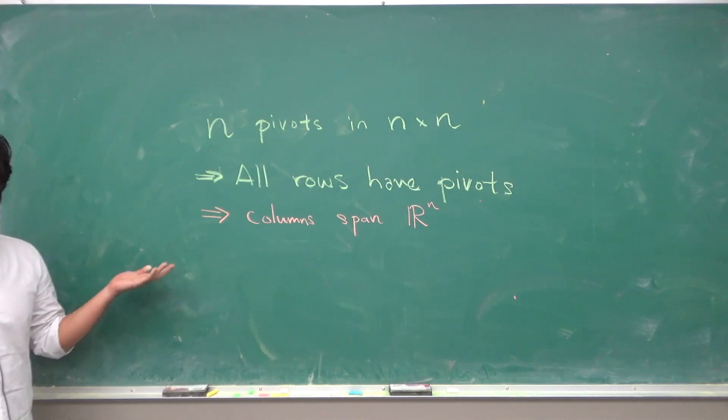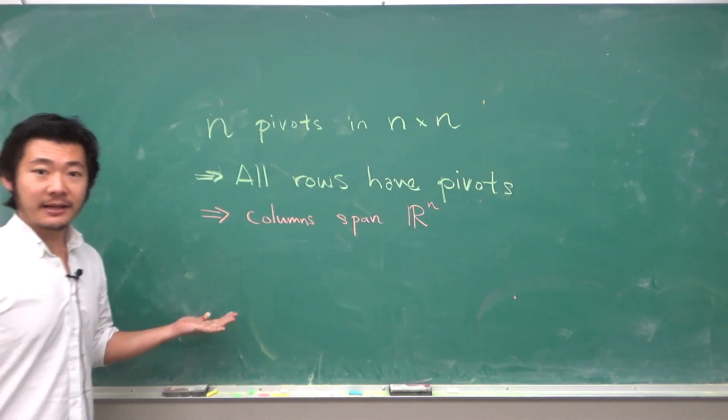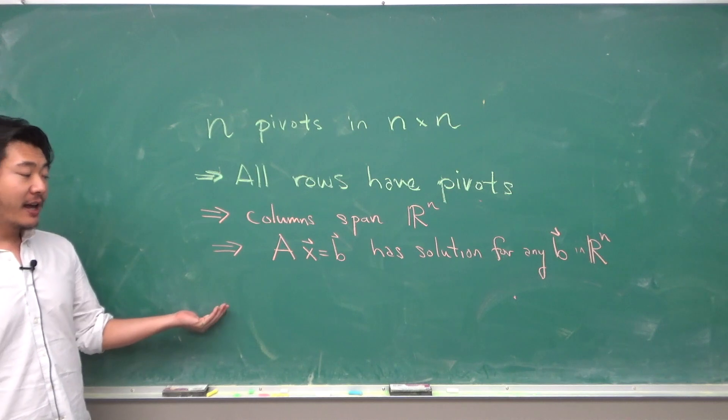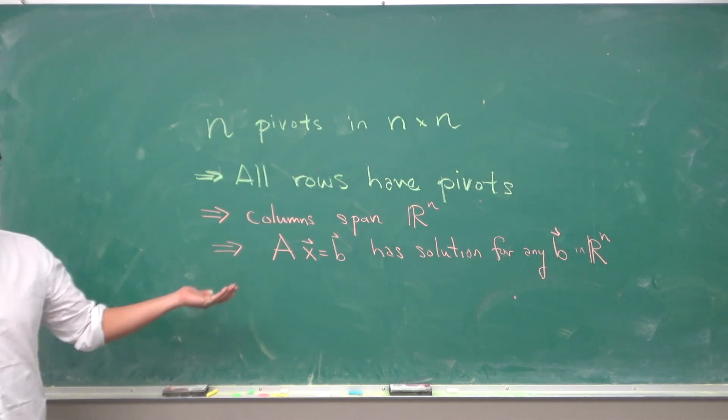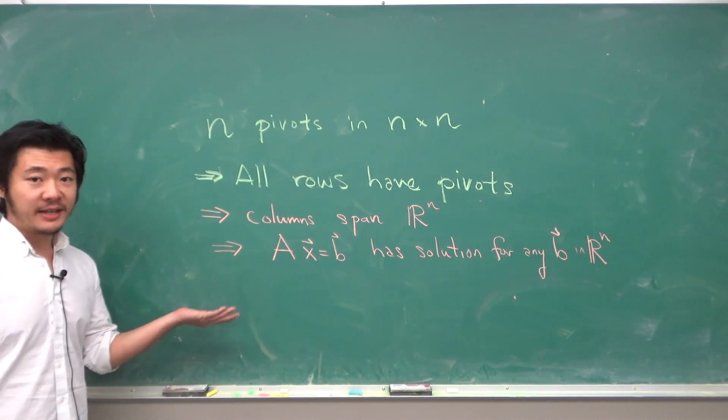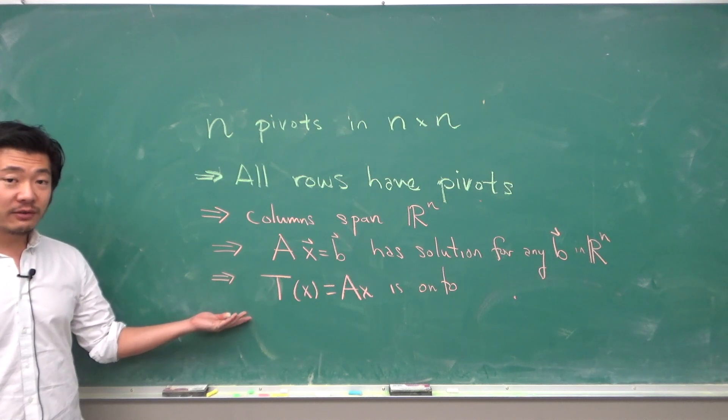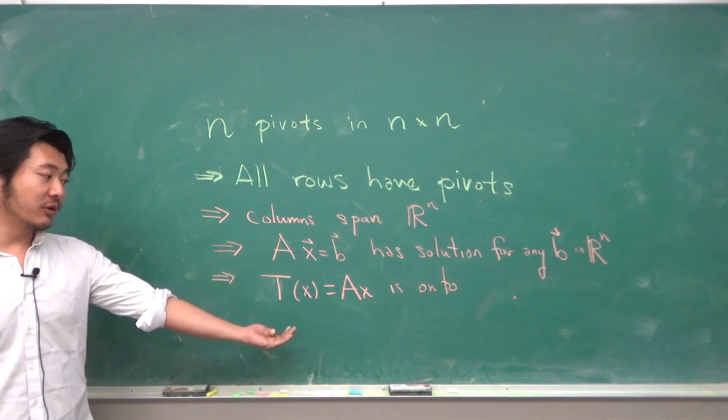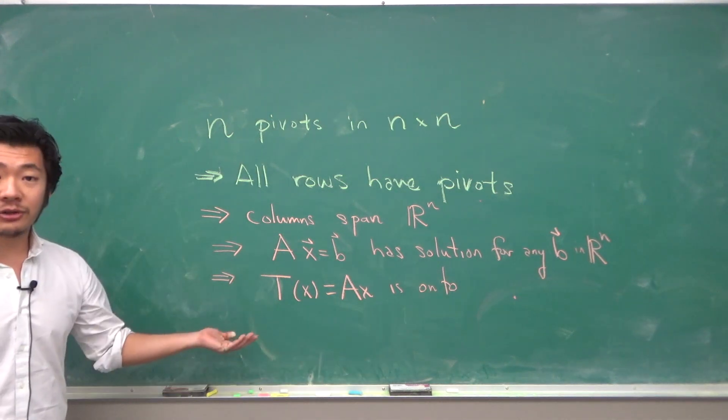That implies that the columns span Rn or another way of saying that is that the linear equation Ax equals B has a solution for any B in Rn. Which is saying that the linear transformation defined by multiplication of A is an onto transformation.